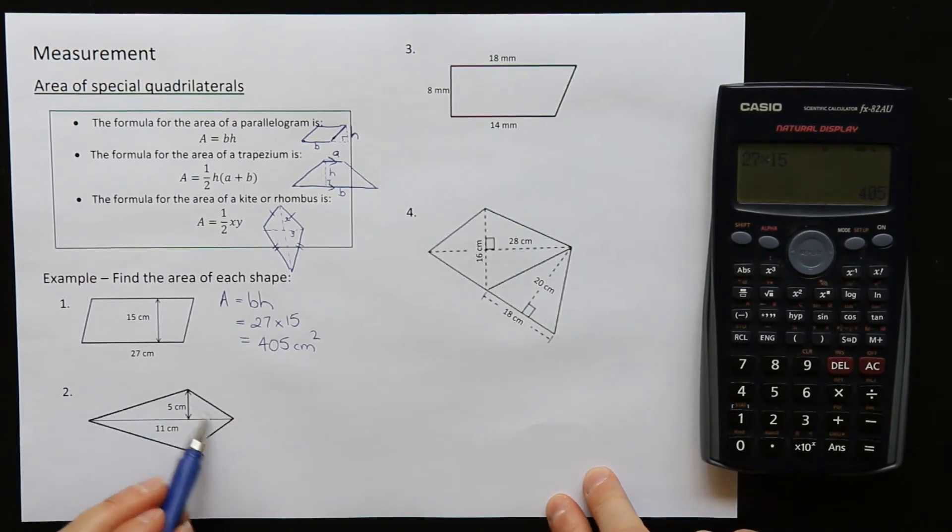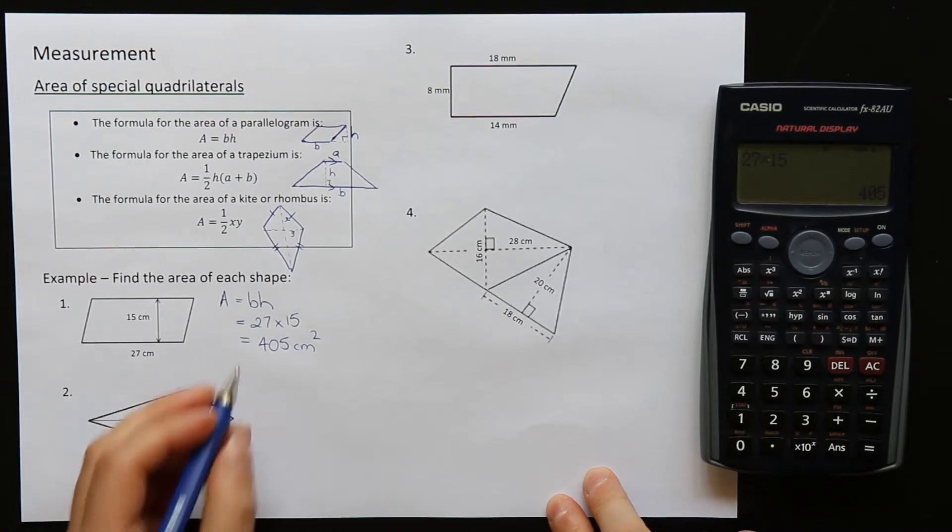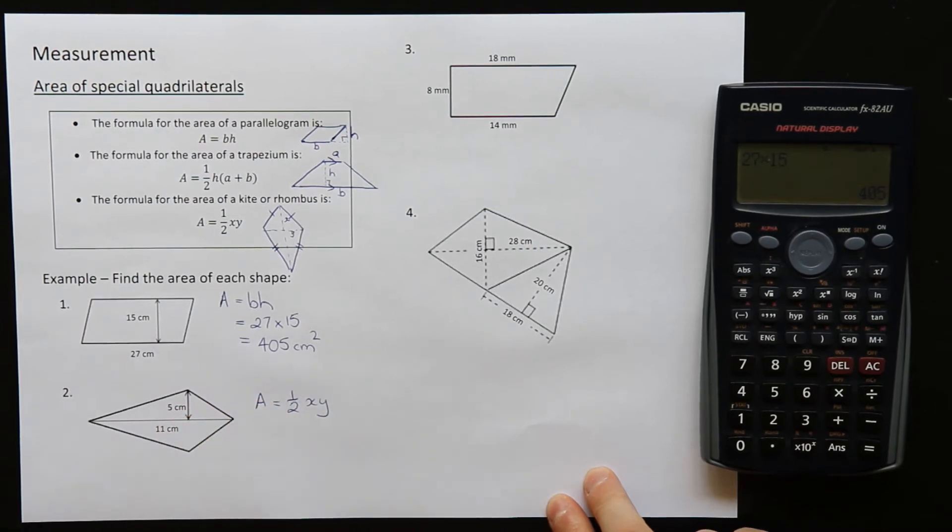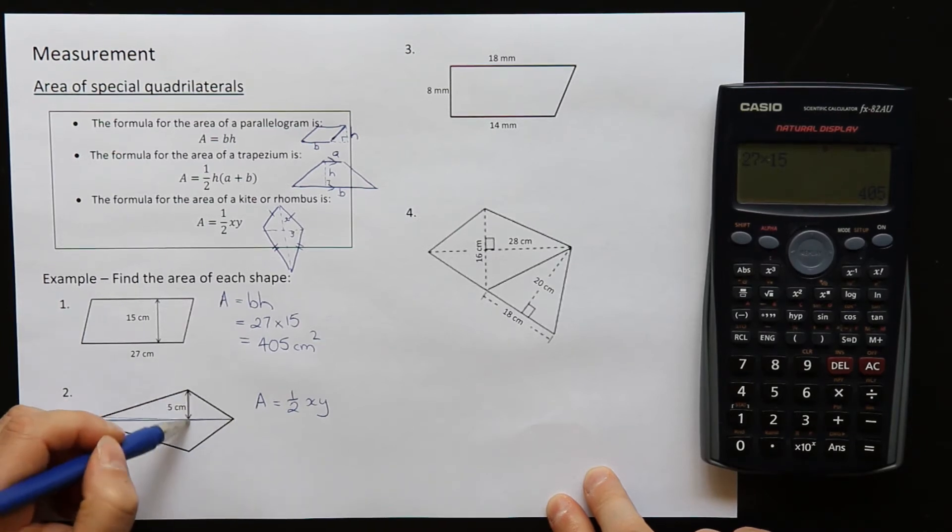In question two I have a kite. It's pushed over on its side, but that's okay. The formula for a kite is half XY. Now the X and the Y are the diagonals, so 11 is one of my diagonals here and the Y would be this one.